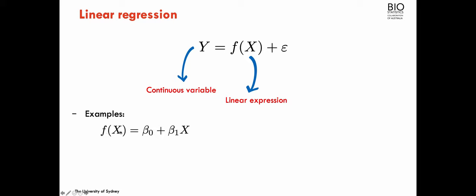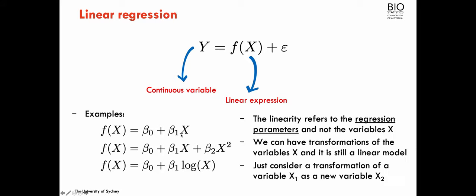I can have other forms for f involving the same variable, actually with transformations, let's say β₀ + β₁X + β₂X². And this is still a linear model, despite the quadratic term of the covariate, or for example β₀ + β₁log(X), logarithm of x.